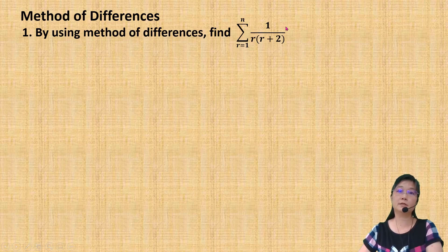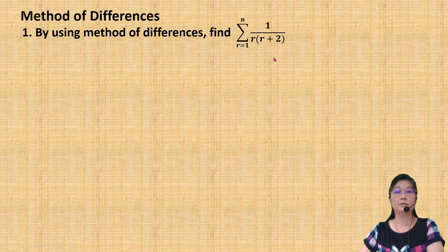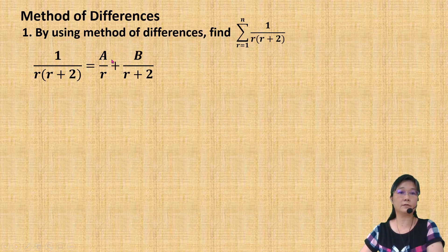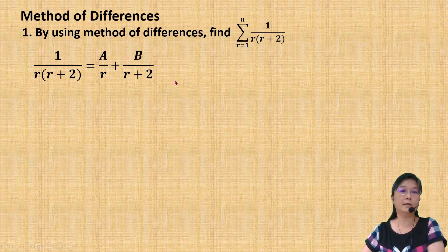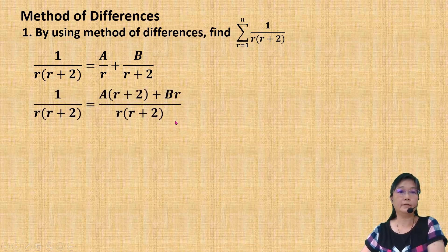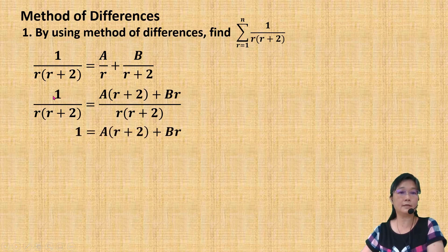But when we look at this question, the general term is in a single term. So the first thing we need to do is change the general term into partial fractions. To find the value of A and value of B, I must change the denominator so that the denominator on the left-hand side and the right-hand side is the same. After combining the expression on the right-hand side, since the denominator is the same, I can ignore the denominator and focus on the numerator part.